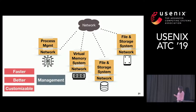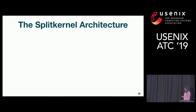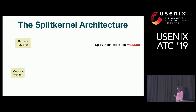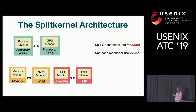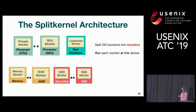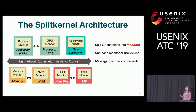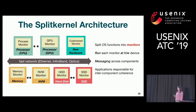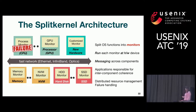By moving functions close and local to the device, we believe we can achieve faster and better management, and customize these different pieces better. With this, we propose the architecture called split kernel. With split kernel, we split OS functions into what I call monitors. For example, we have a process monitor running on CPU, a GPU monitor running on GPU, and a memory monitor running on memory. If you invent a new hardware, you can build your own customized monitor and plug it into the network. We assume a general-purpose network that only does messaging, leaving inter-component coherence to the application, which solves many performance issues. The split kernel also handles failure and resource management.